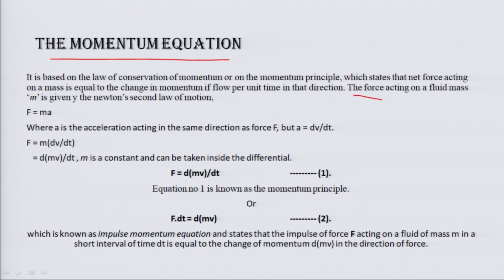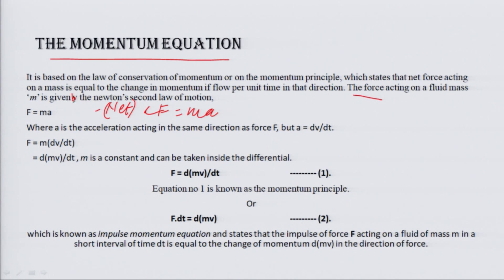The force acting on a fluid mass m is given by Newton's second law of motion: F is equal to m·a, where F is the net force or resultant force, m is mass, and a is acceleration.